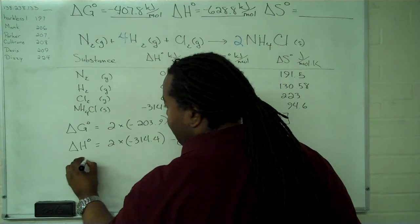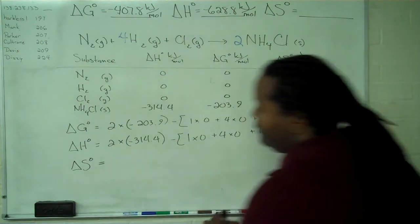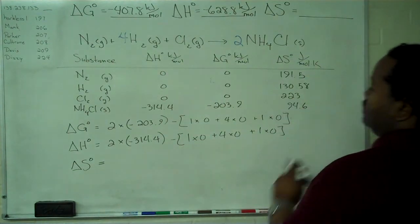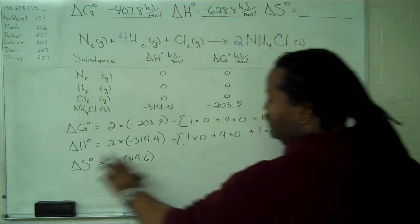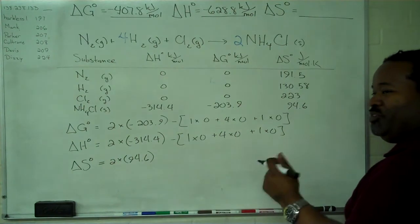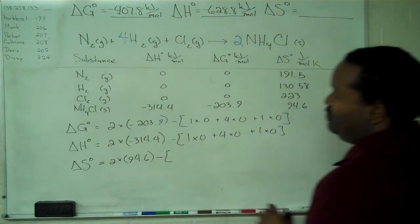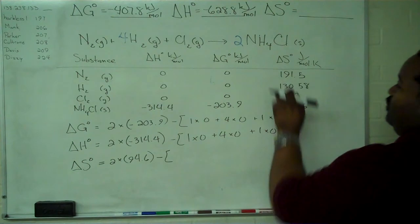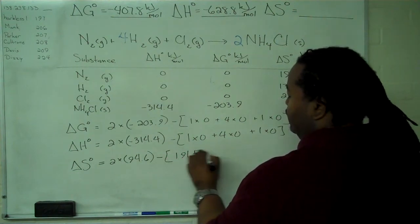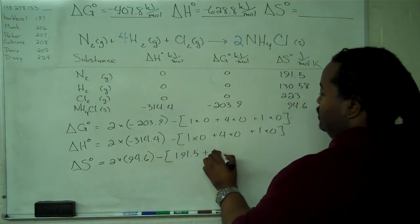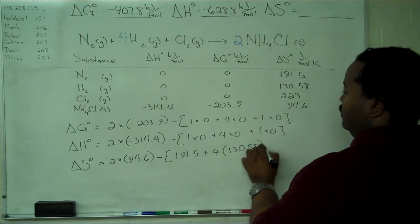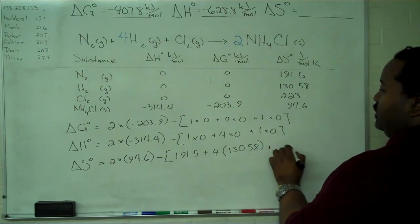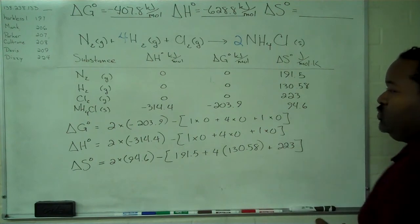Finally, for the entropy, we're going to do two times 94.6. That's our stoichiometric sum of products minus stoichiometric sum of reactants: one times 191.5 from the nitrogen, four times 130.58 for the hydrogen, and one times 223 for the chlorine.